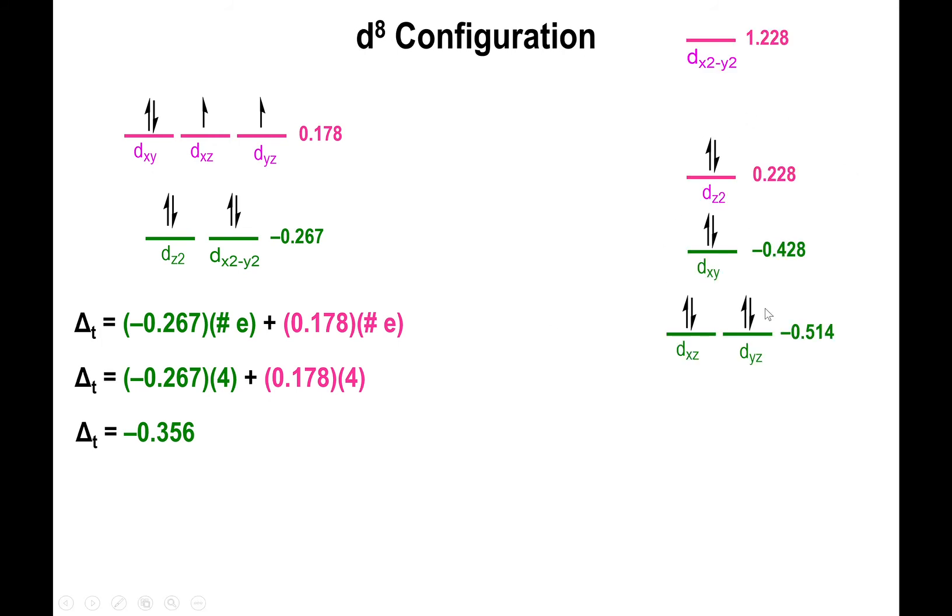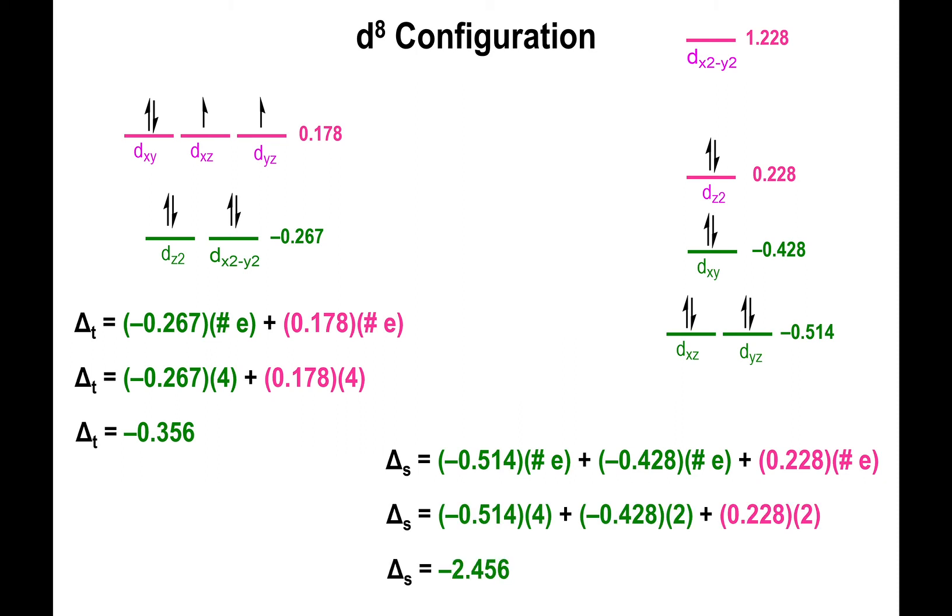For the square planar structure with eight electrons, you stop at the second to last energy level and the last one is empty. If you multiply negative 0.514 by four electrons, negative 0.428 by two electrons, and 0.228 by two electrons, the stabilization energy of the square planar complex is negative 2.456 delta octahedral values. Compare that to delta tetrahedral at 0.356—it's almost a non-competition.